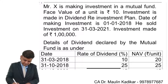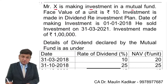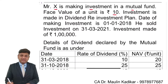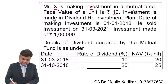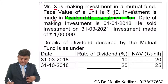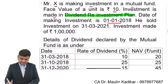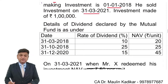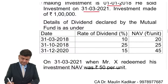Let us see the next question. Mr. X is making an investment in a mutual fund. The face value of the unit is Rs. 10. Investment is made in a Dividend Reinvestment Plan. Date of making investment is January 1st, 2018. He sold the investment on 31st of March 2021. Investment made is an amount of Rs. 1 lakh.